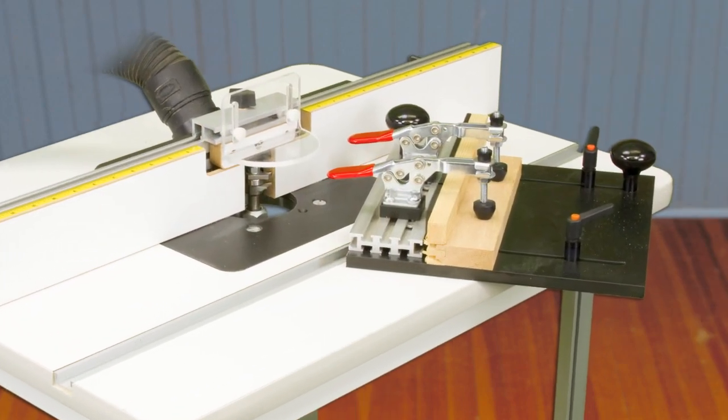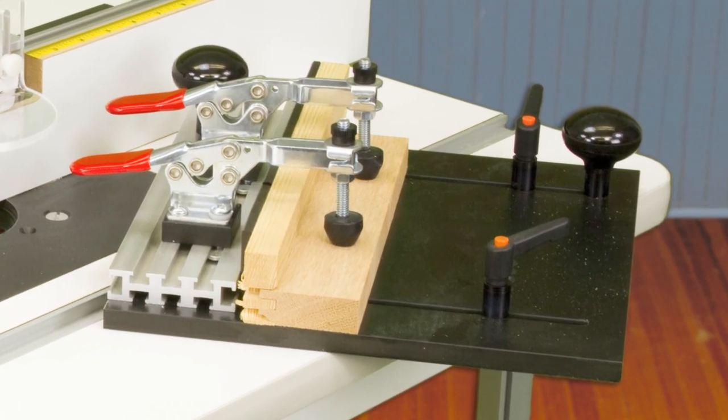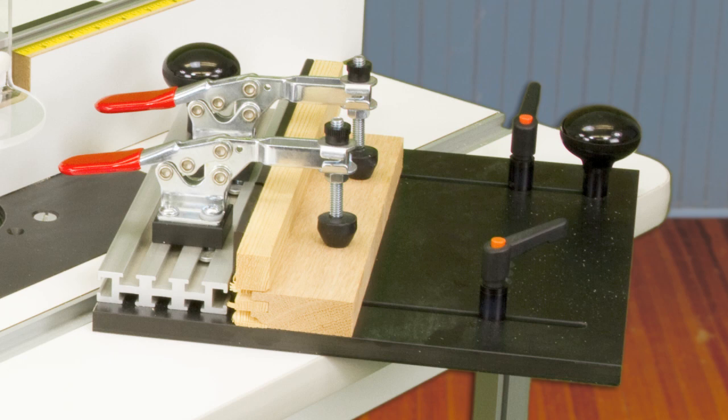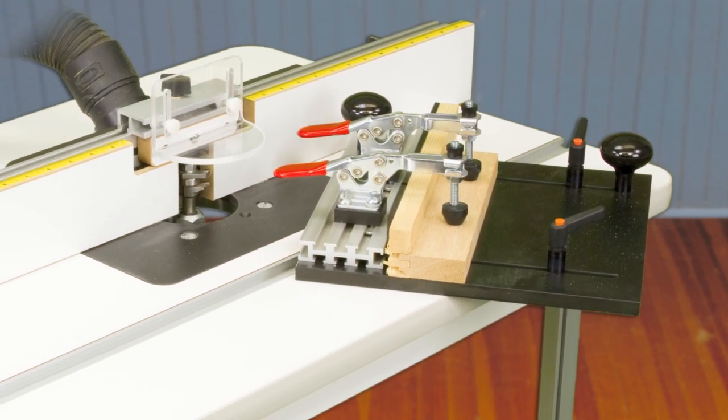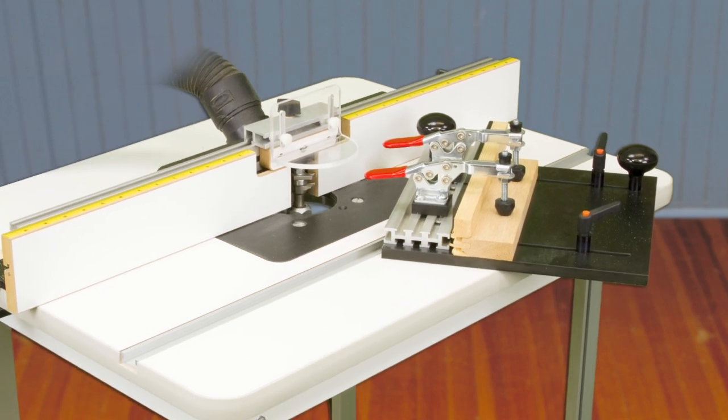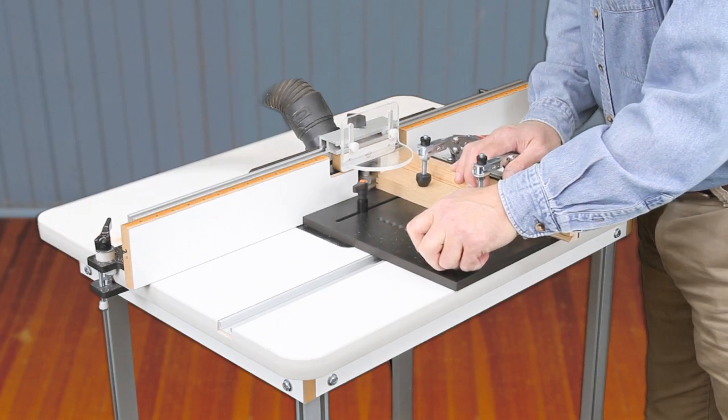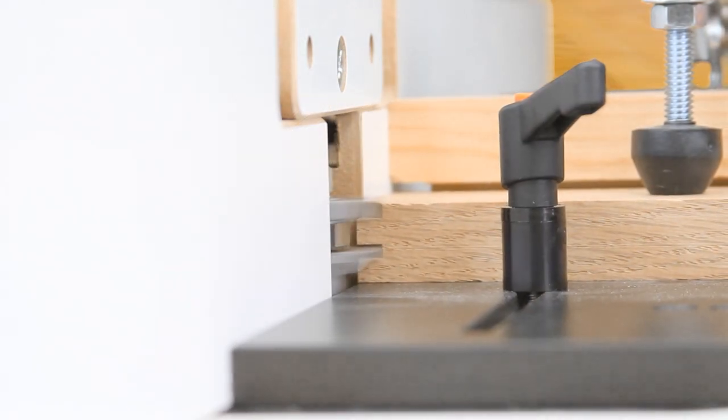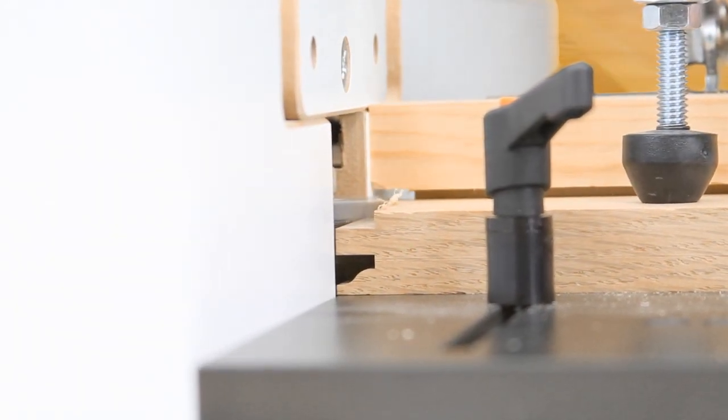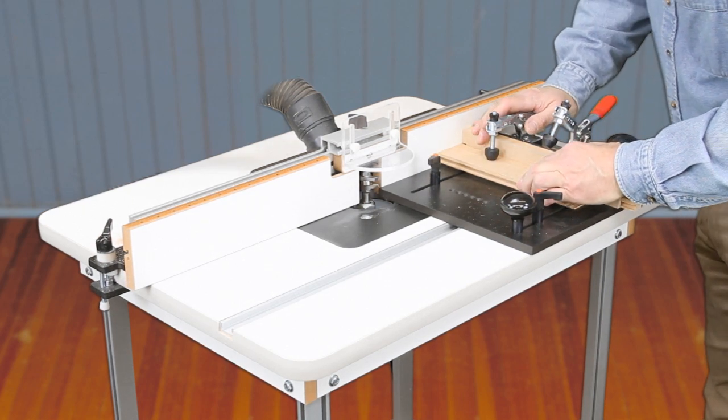Cut the straight rail to length and set up the coping bit. To prevent tear out as the bit exits the work, you'll need a backer for your coping sled. If the pattern cut is made first, you'll need two backers: a smooth backer made of 1/4 inch masonite and a cope backer made of 3/4 inch stock, both as long as your longest rail. Make the cope cut with the patterned edge of the rail inserted in the coped backer. Make the opposite cope cut with the smooth backer between the work and the coped backer.